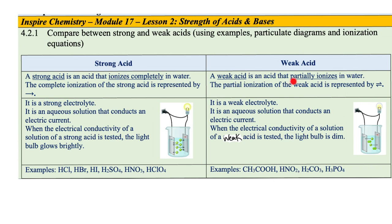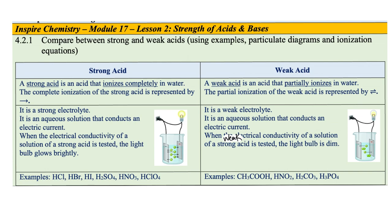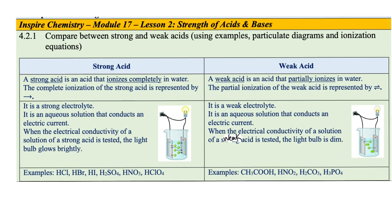On the other hand, we have weak acids. A weak acid is an acid that partially ionizes in water. The partial ionization of the weak acid is represented by a double-headed arrow. It's a weak electrolyte — an aqueous solution that conducts an electric current. When the electrical conductivity of a weak acid solution is tested, the light bulb is dim. So as you can see, it's bright for strong acids and dim for weak acids. Examples of weak acids include acetic acid, nitrous acid, carbonic acid, and phosphoric acid.